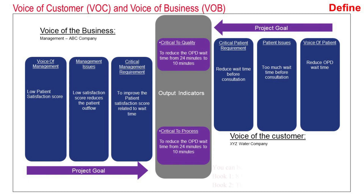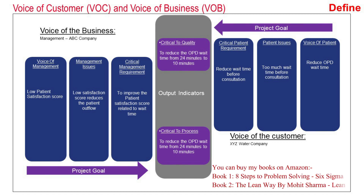The first thing that the Six Sigma team did was to understand the voice of the business and voice of the customer. Here the customer is the patient, so it is written as voice of the patient. The voice of the patient was to reduce the OPD wait time. The patient issue was that too much wait time was there before consultation, and the critical patient requirement was to reduce the time before consultation. This leads to CTQ, which is critical to quality, which said to reduce the OPD wait time from 24 minutes to 10 minutes.